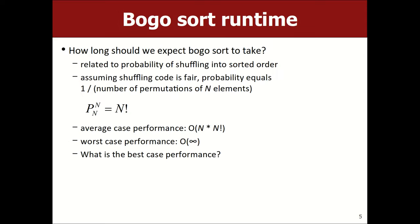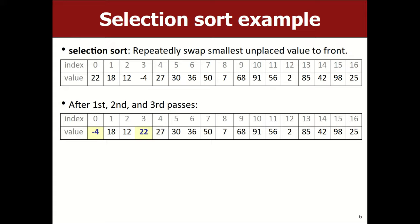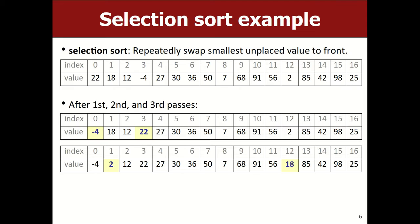Here's one that's less silly but still mediocre — selection sort. You walk across the array, find the smallest element, and swap it to the front. Then find the next smallest and swap to index 1, and so on. Important: it's a swap, not shift and remove. The sorted sub-portion grows one element at a time until the whole thing is sorted.